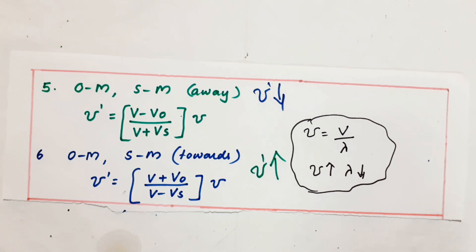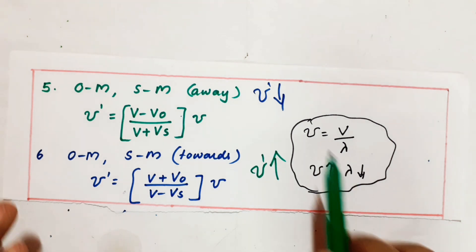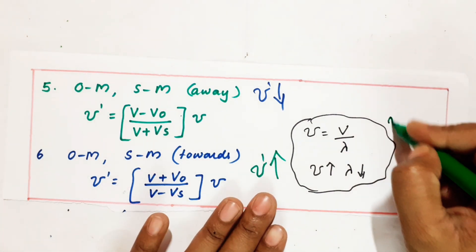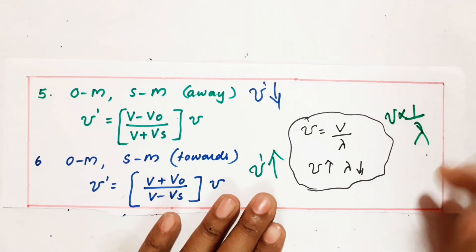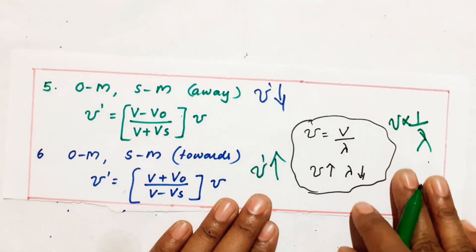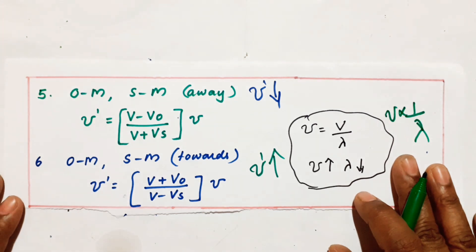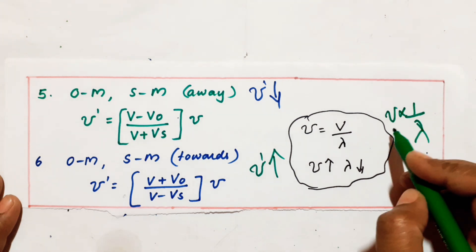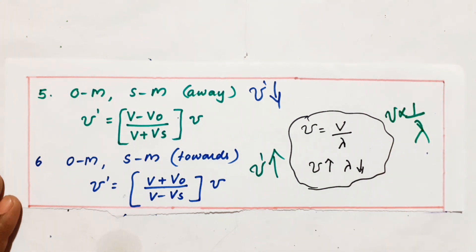They can also ask questions related to wavelength. Remember: frequency equals V by lambda, so frequency is inversely proportional to wavelength. In all the cases where frequency increases, wavelength will decrease, and vice versa. As frequency increases, wavelength decreases.